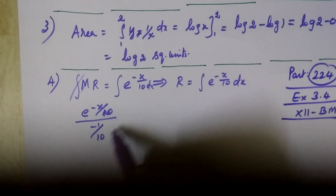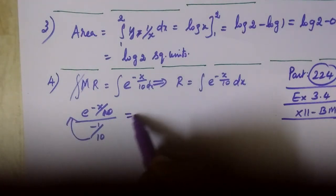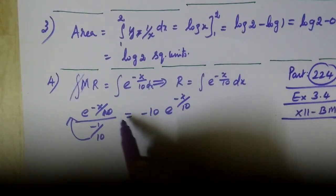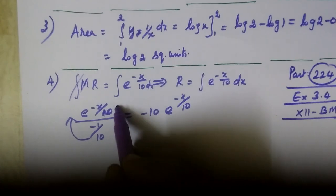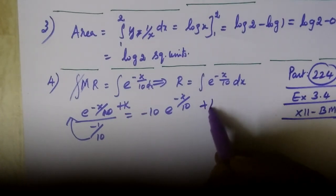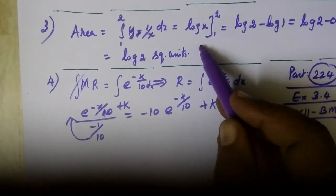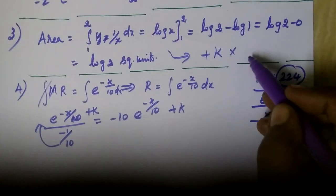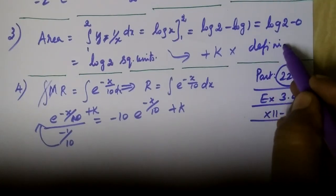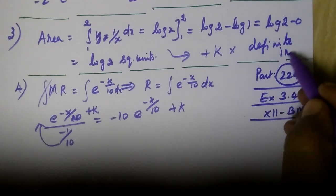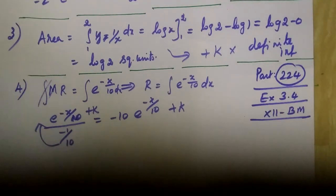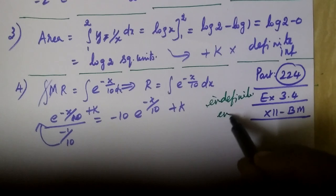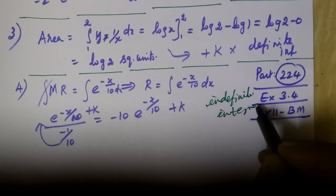Apo, this will go here. So that is equal to minus 10 E power minus X by 10. This is indefinite integral. And that one is definite.